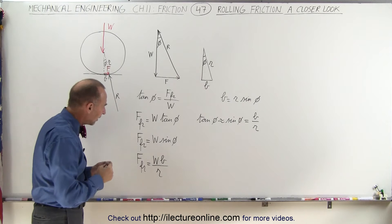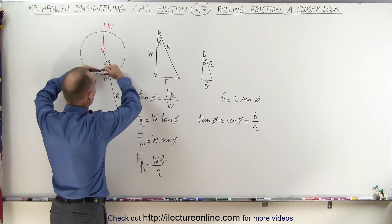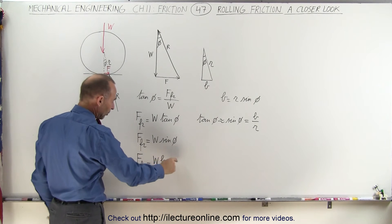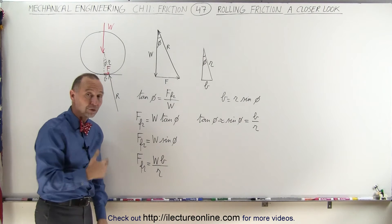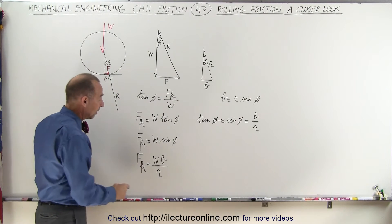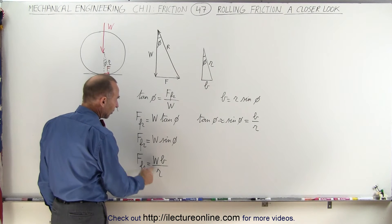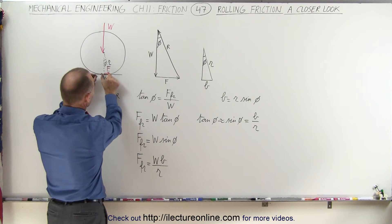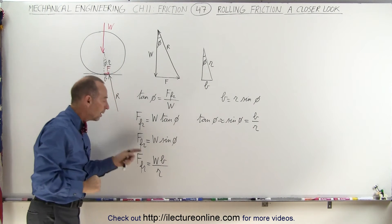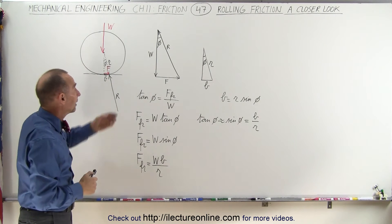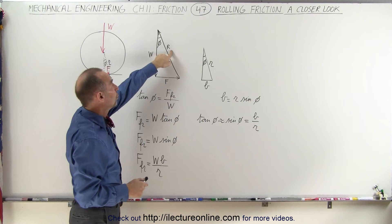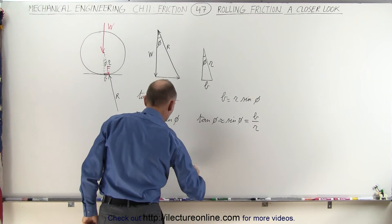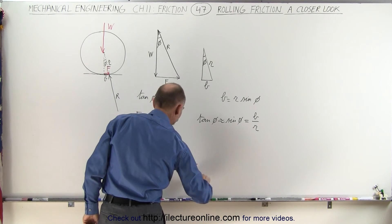Looking at that equation, we realize that the friction force increases as there is more deformation of the wheel. As b doubles, triples, and quadruples, the friction force increases likewise. And if the radius of the wheel increases, the friction force decreases. There is a strong relationship between the radius of the wheel and the length of the deformation against the surface. Since the angles are small, the weight is very similar to the reaction force, so this could also be expressed as the reaction force times b divided by the radius.